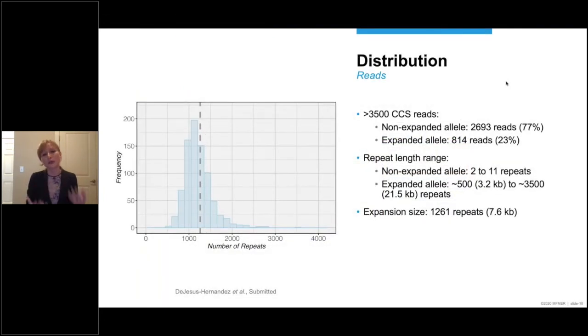We then looked at the distribution of the reads. In total, we obtained more than 3,500 CCS reads for all individuals combined, almost 2,700 for the wild-type allele and more than 800 for the expansion. We also looked at the wild-type allele more thoroughly and detected 2 to 11 repeats. And that's correct, because we were able to compare it to the results of a fluorescent PCR. We then looked at the expanded allele and detected 500 to more than 3,500 repeats. So that's more than 20 KB. And the histogram is shown on the left with the frequency and then the number of repeats on the x-axis. The dashed line represents the median. And the median of the individuals we investigated was 1,261 repeats. So almost 8 KB.